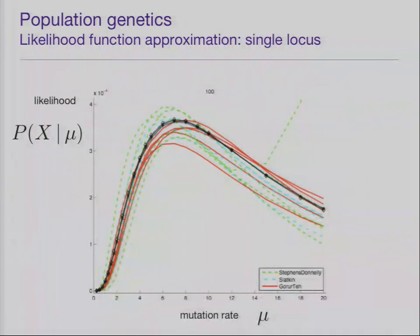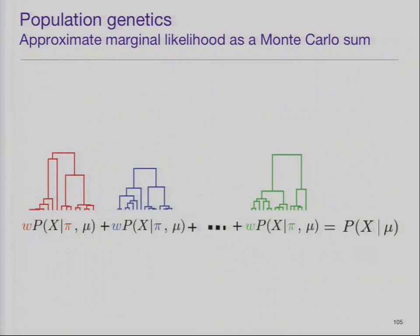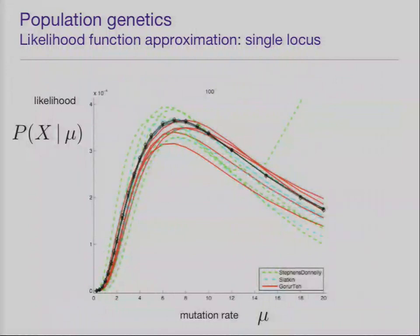In population genetics, what people want to do is use a Monte Carlo sum to approximate the marginal likelihood. They have the data, model it given the tree and the mutation parameter — the mutation rate — and sample different trees using sequential Monte Carlo algorithms. There are weights associated with each tree. When you sum over these different samples with different weights, you get an estimate of the marginal likelihood — basically the probability of the data given the mutation rate. They want to get this so that later they can plot the curves of mutation rate versus marginal likelihood, and figure out which mutation rate is the most likely rate that produced the observed data. This is one way of deciding what was the mutation rate for the population being studied.